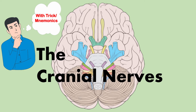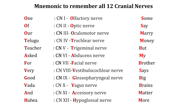Hello and welcome back friends. Welcome back to another video tutorial from MMS Makes Medicine Simple. Today in this video we are going to talk about the tricks and mnemonics to remember all 12 cranial nerves, and we will also talk about the type of those nerves, whether they are sensory, motor or both. With the help of these two mnemonics, you can easily remember the names and types of all 12 cranial nerves.